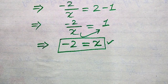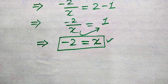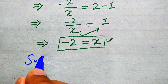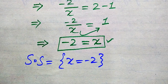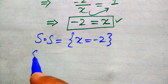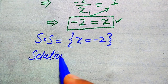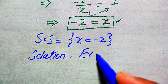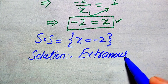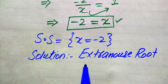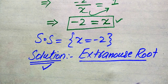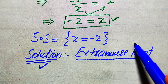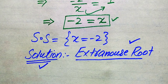As verified in the first method, X equals minus 2 satisfies the given equation, so the solution set is X equals minus 2. To clarify the definitions: a root that satisfies the given equation is called a solution, while a root that does not satisfy the given equation is called an extraneous root. Please remember these definitions.